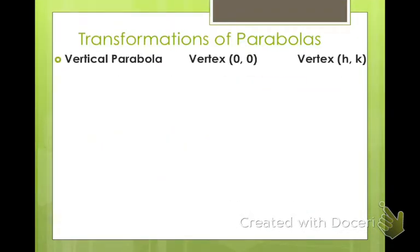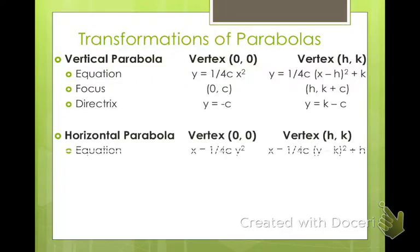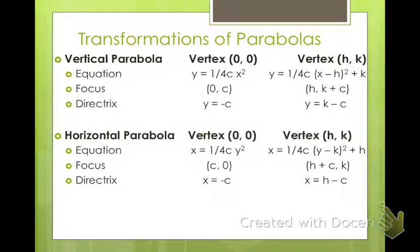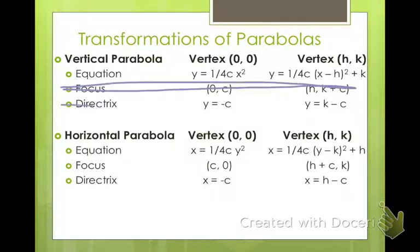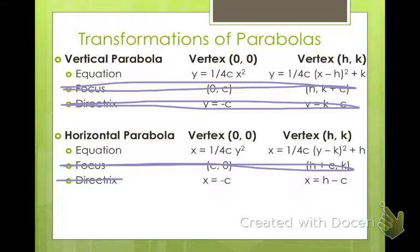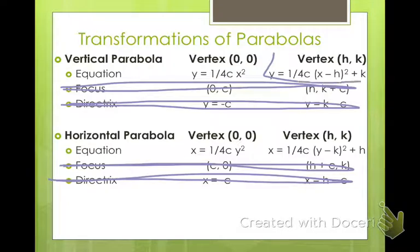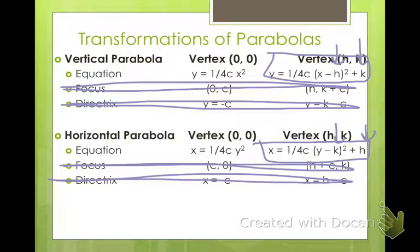For transformations of parabolas, the focus is always inside the parabola and the directrix is always outside. The equations are: y = 1/(4c) times (x - h)² + k for a vertical parabola with vertex at (h, k), or x = 1/(4c) times (y - k)² + h for a horizontal parabola. Notice that when it's y equals, the (x - h) is squared; when it's x equals, the (y - k) is squared.